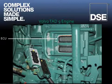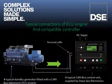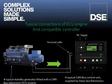This helps to limit emissions and meet constantly tightening industry regulations. Here we have a simplified diagram of a CAN bus connection from an ECU to a DSC electronic engine compatible controller. Parameters such as engine speed, coolant temperature, fuel usage, and many more are displayed on the DSC controller, along with engine diagnostics should the engine ECU detect a fault.